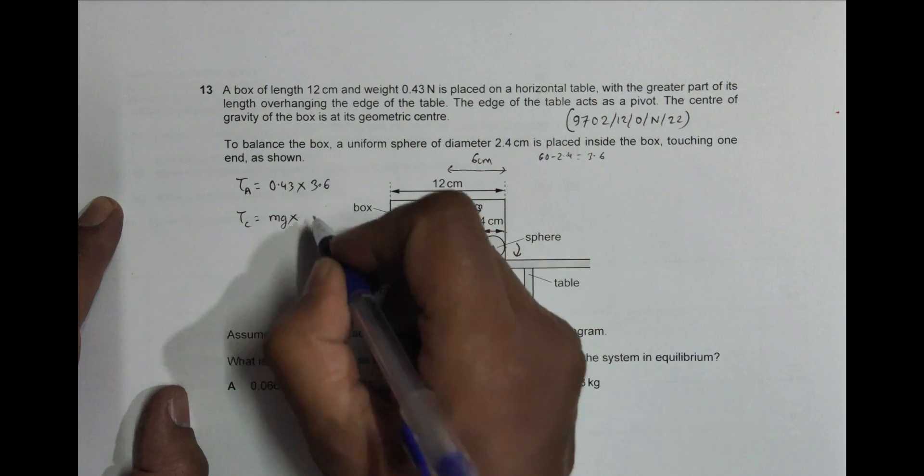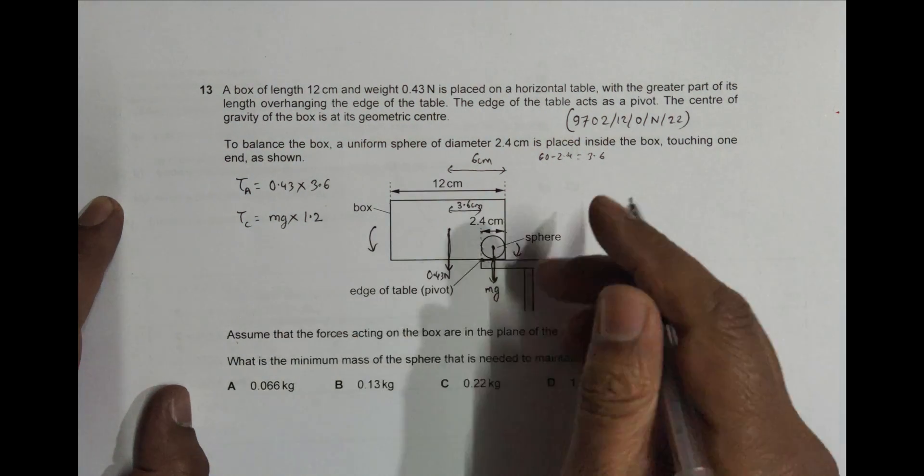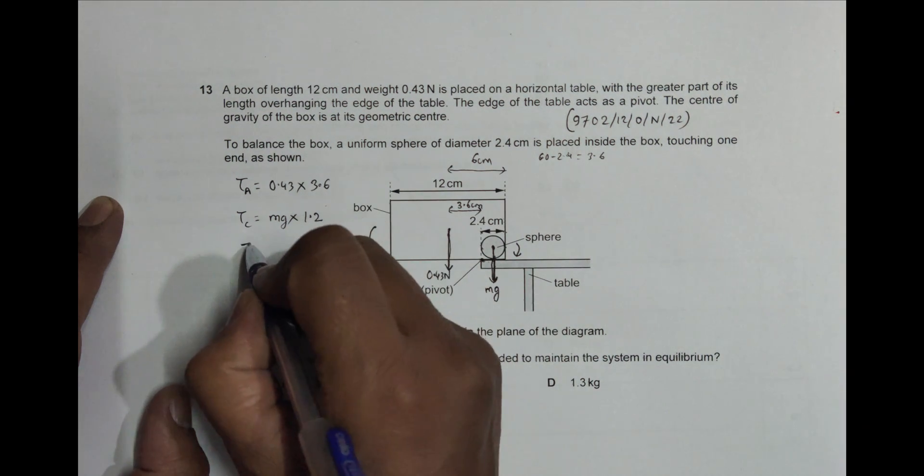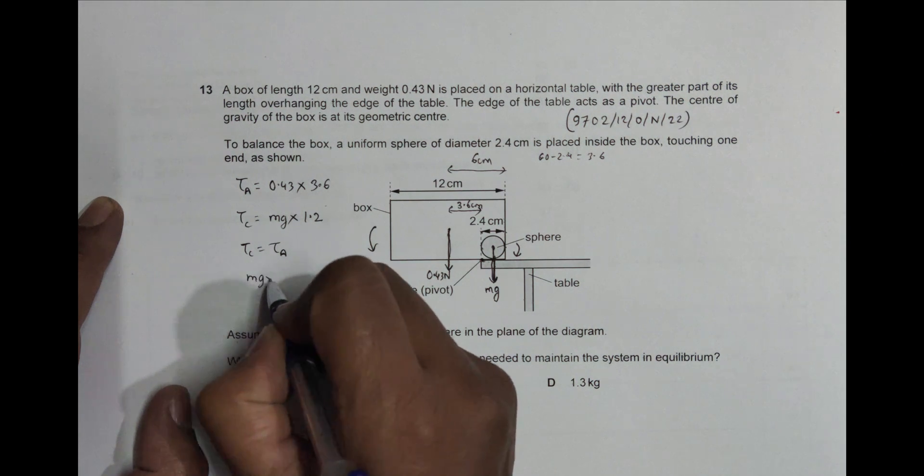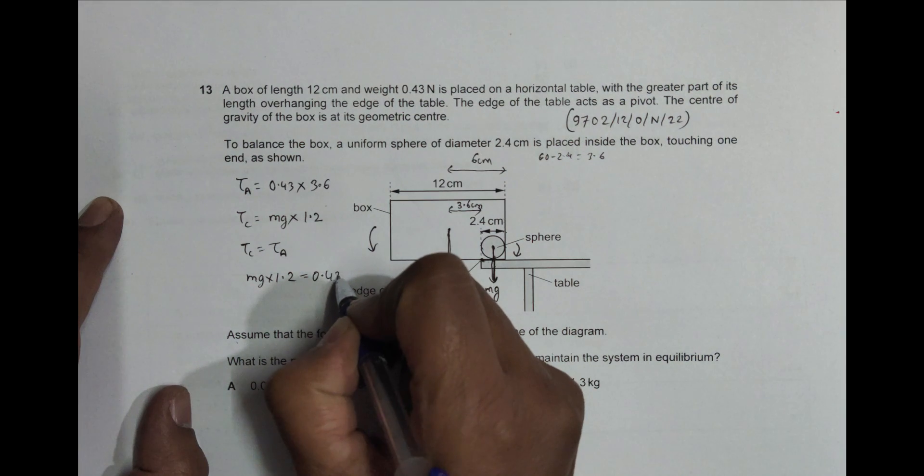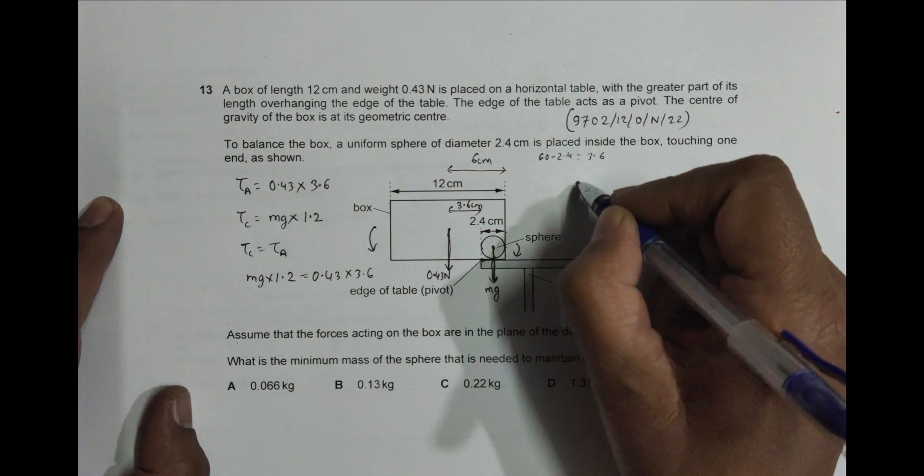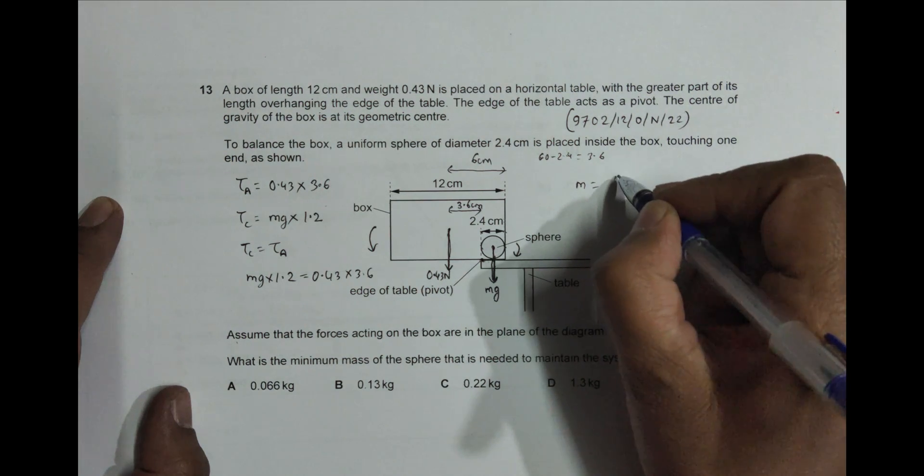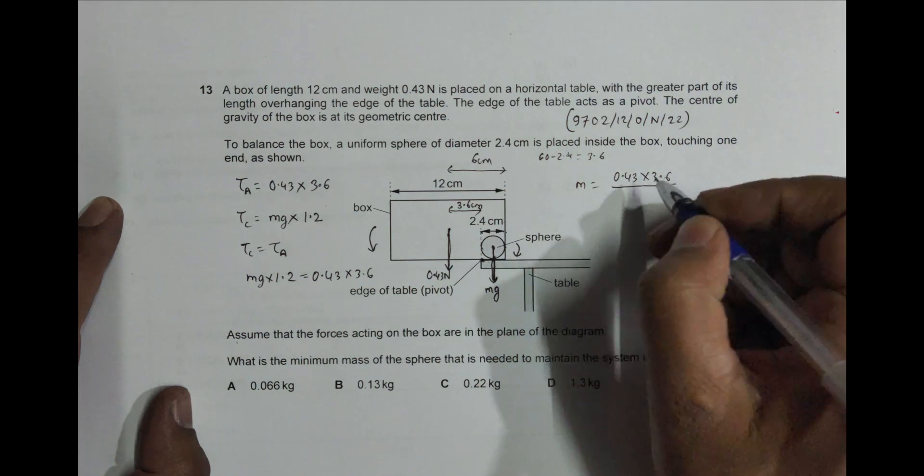So that means now when it is in balance, we must have tau clockwise equal to tau anti-clockwise. This gives us mg into 1.2 equals 0.43 into 3.6. Then this will give me m equals 0.43 into 3.6 divided by g, which is 9.81, into 1.2.